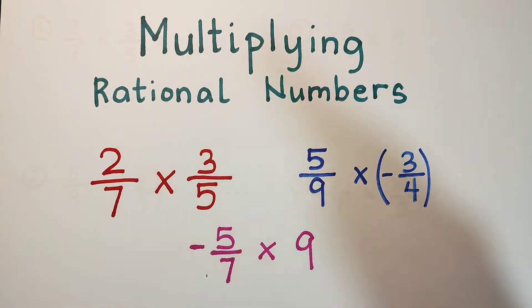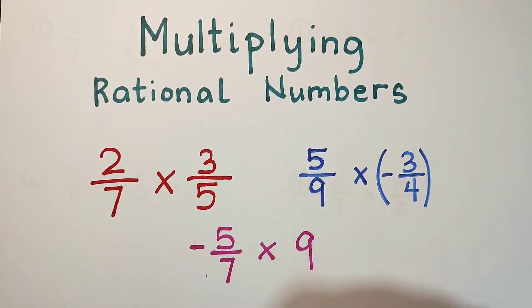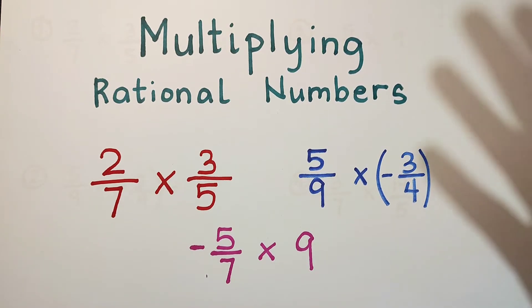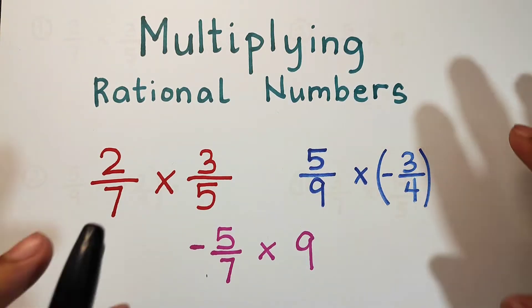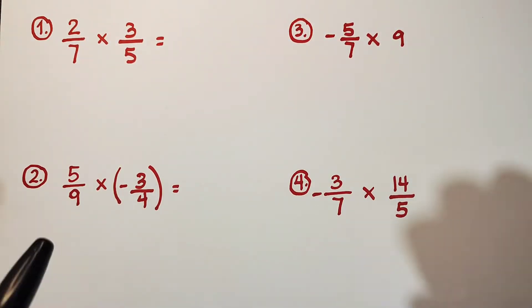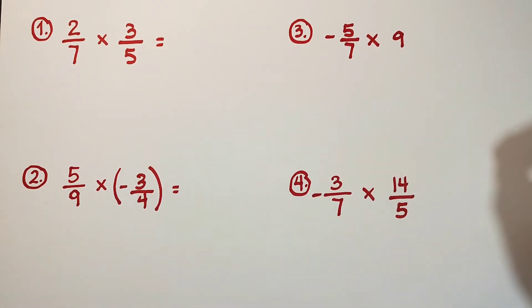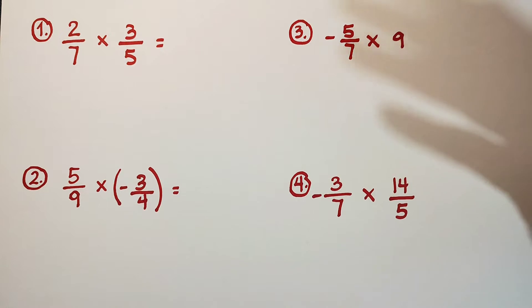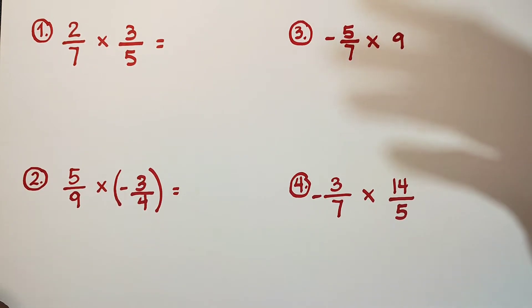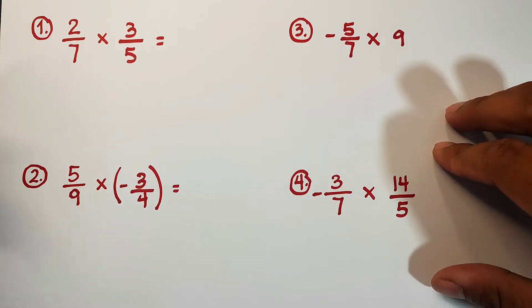Hi guys, it's me Teacher Gorn. In today's video we will talk about multiplying rational numbers. Last time we uploaded a video where we talked about how to add or subtract rational numbers. So without further ado, let's do this topic. What we have here are examples of multiplying rational numbers. In multiplying rational numbers, you can apply the rules on how to multiply integers, where you deal with positive and negative signs.